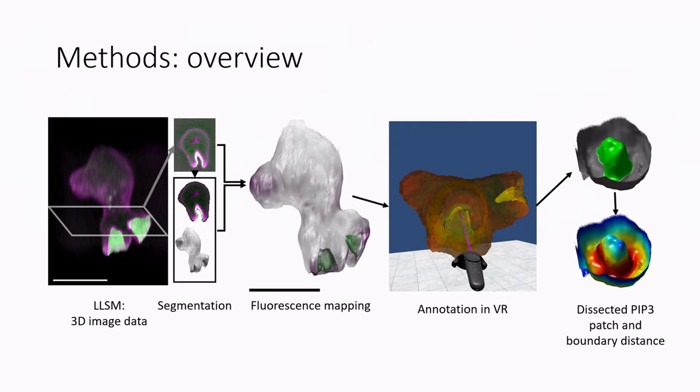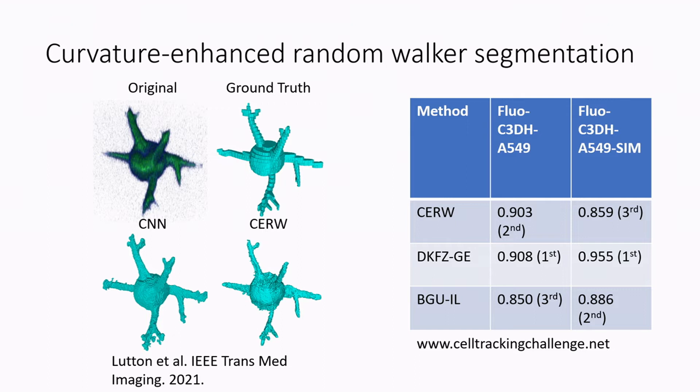So we have a segmentation method. It's not a deep learning method, which has the advantage that we don't need a lot of manually annotated training data. It's called the curvature-enhanced random walker, and it basically allows you to segment complex surfaces with just some seeding inside and outside the cell. And we do this all automatically, so we can churn through any data. It doesn't really matter, and we performed comparably to deep learning methods.